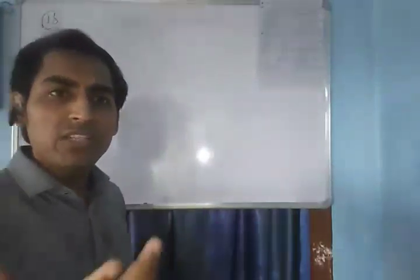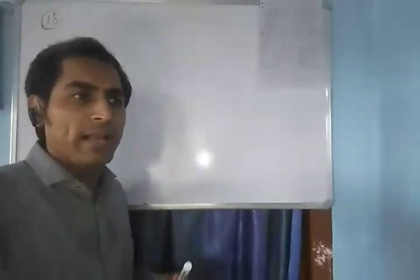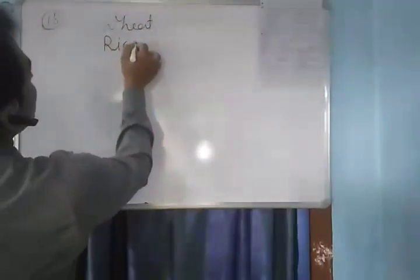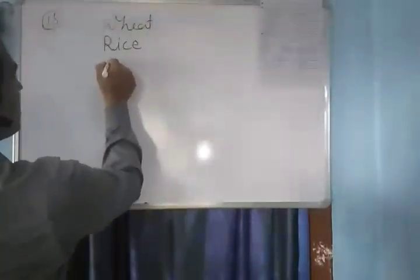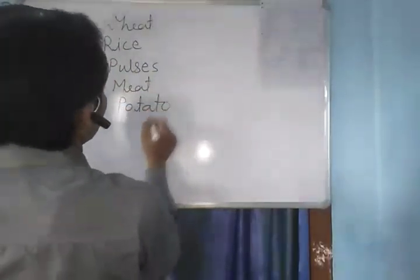The first question in short answer type questions: What is food? Give five examples of food. Food is something that we eat to get energy for doing physical work and also it helps in the repairing of the damaged parts of the body. So food is anything that we eat. Five examples of food are: wheat, rice, pulses, meat, potato, and apple.